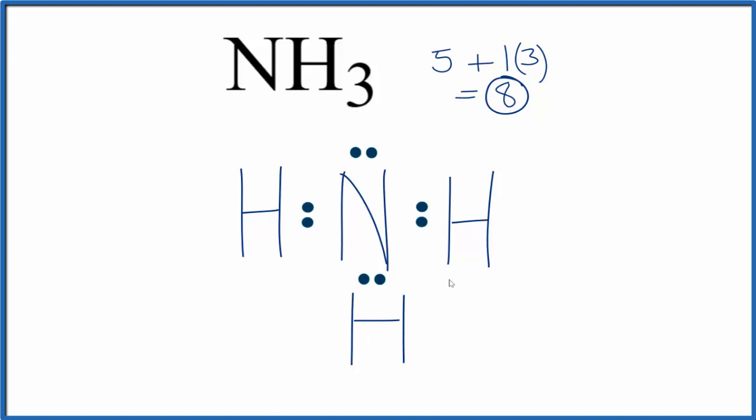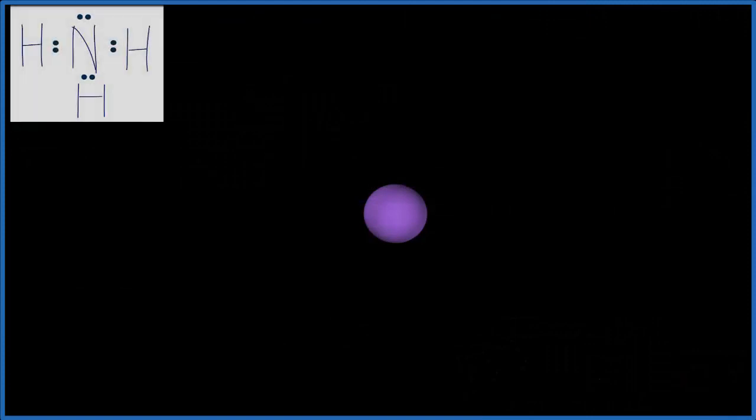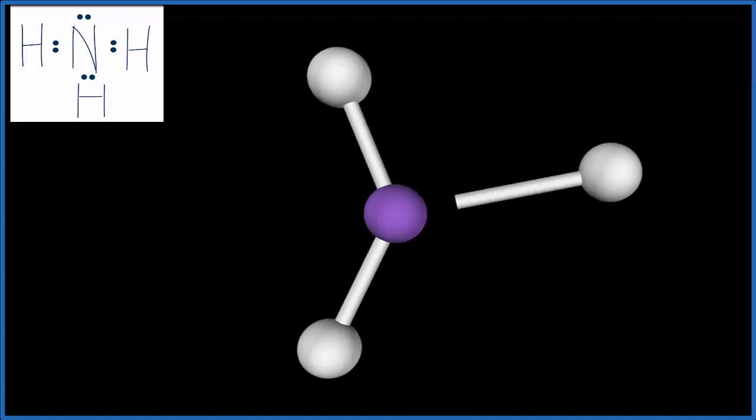The molecular geometry, that would look like this. So the purple, that'll be that central nitrogen atom. We have 3 hydrogen atoms, all single bonded. 1, 2, 3.